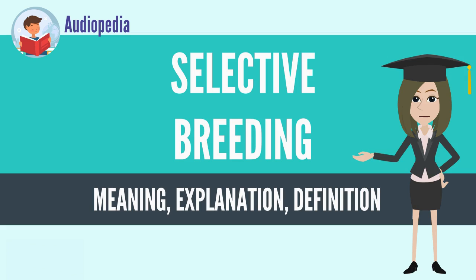Charles Darwin discussed how selective breeding had been successful in producing change over time in his 1859 book On the Origin of Species. Its first chapter discusses selective breeding and domestication of such animals as pigeons, cats, cattle, and dogs. Darwin used artificial selection as a springboard to introduce and support the theory of natural selection. The deliberate exploitation of selective breeding to produce desired results has become very common in agriculture and experimental biology.